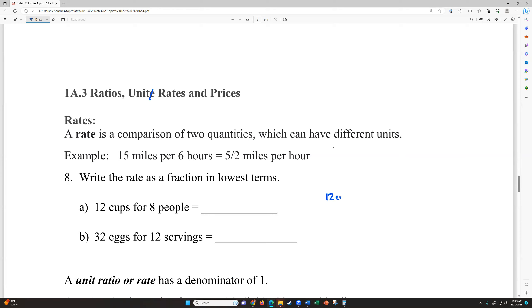So we want to write these rates as a fraction in the lowest terms. 12 cups for eight people. So 12 cups over eight people. We want to reduce that. So my button on my calculator that allows me to do that tells me that's three halves. And that would be cups per person. And so that would be the answer for this box. 32 eggs for 12 servings. So 32 eggs per 12 servings. So if I reduce that fraction, 32 over 12, we get eight thirds, dividing them both by four. And that'd be eggs per serving.